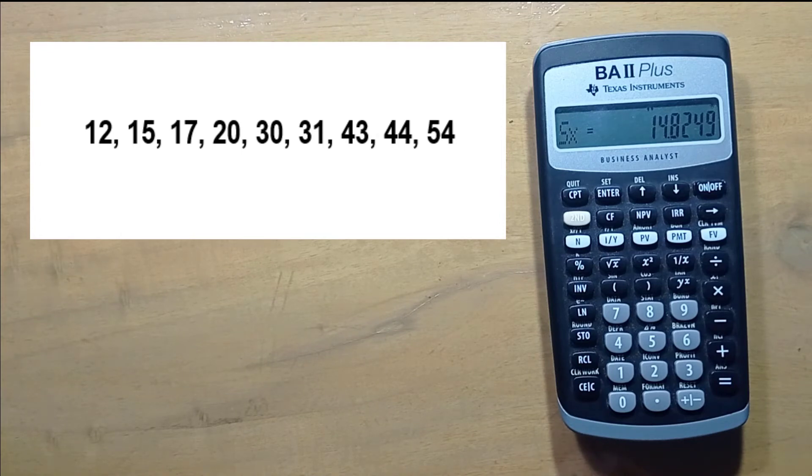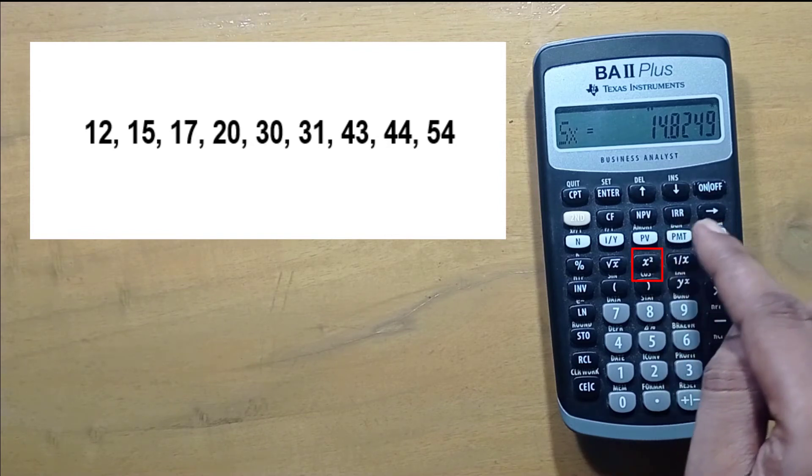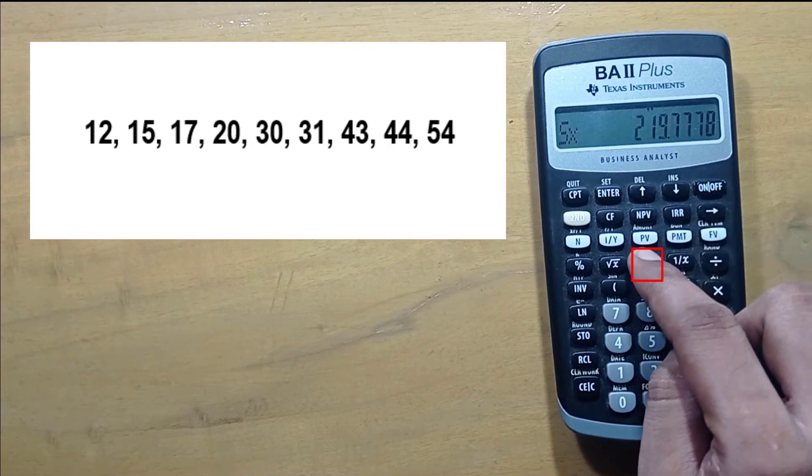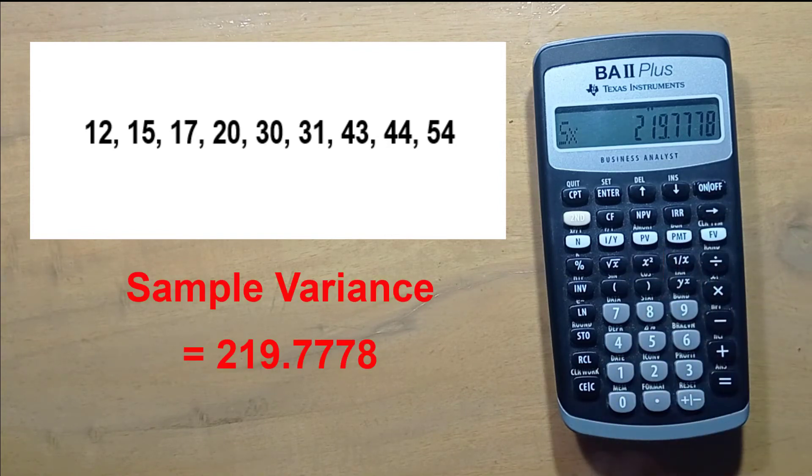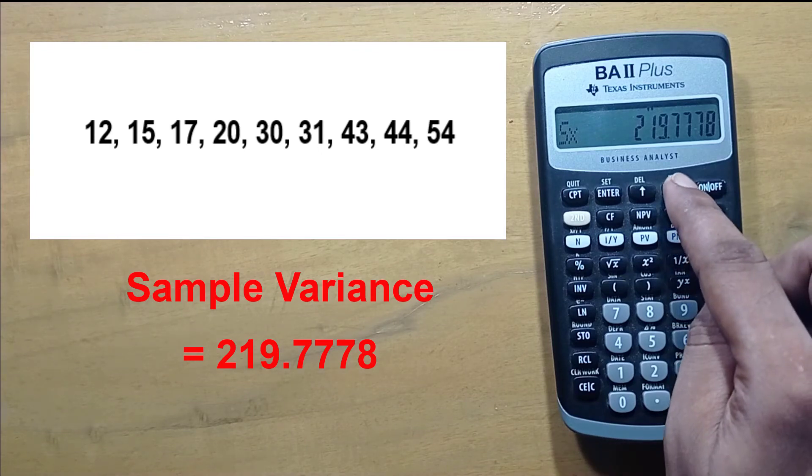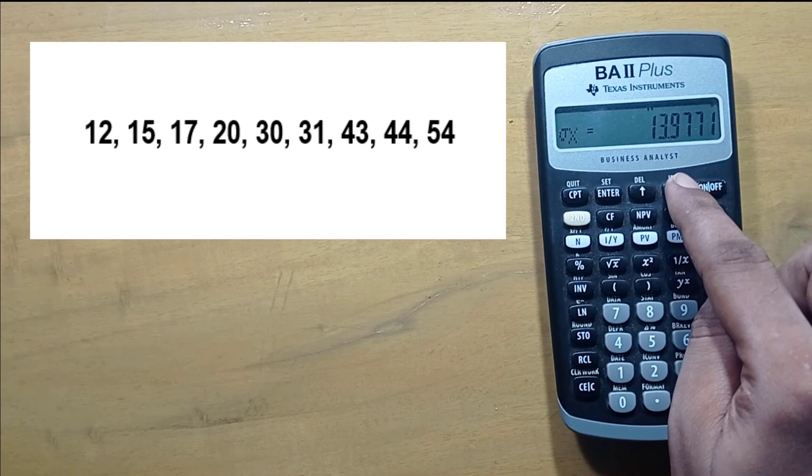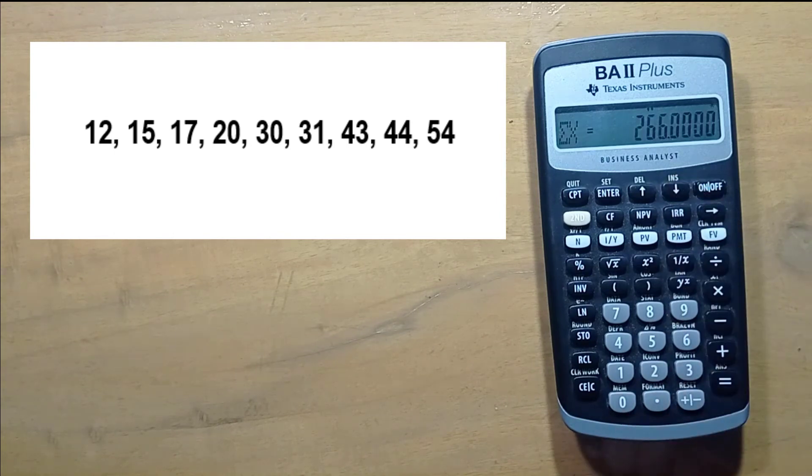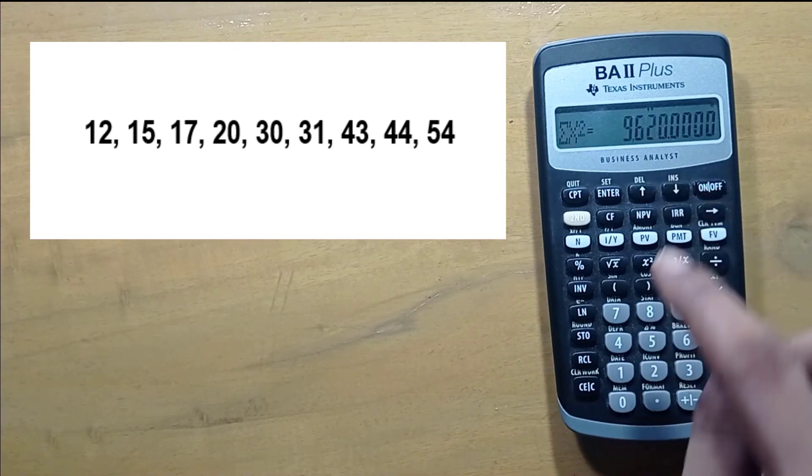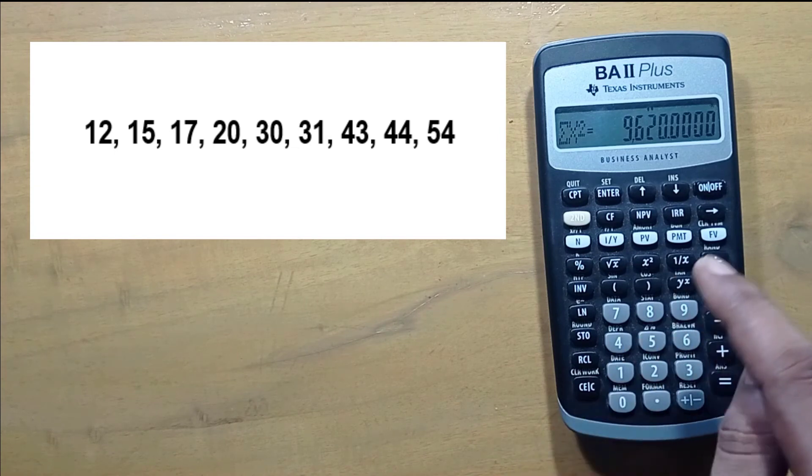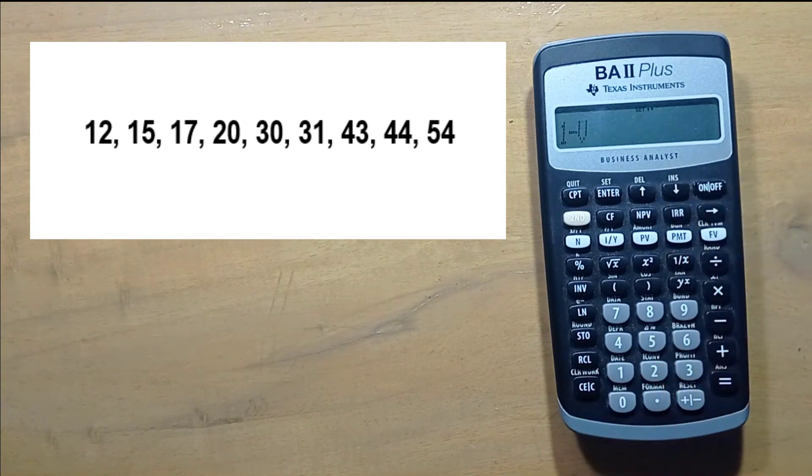To obtain the sample variance, just press the square sign. This is our sample variance, which is 219.7778. Scroll down. This is our population standard deviation, this is summation of x, this is summation x square, and that's it.